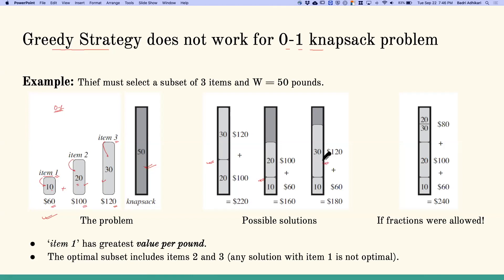Now dynamic programming would obviously find the optimal solution here. Let's see if greedy strategy can. With greedy strategy, we calculate the value per pound by dividing the value by the weight. For item 1, this would be $60 divided by 10 equals $6 per pound. Similarly for item 2, the value per pound would be $100 divided by 20, which is $5 per pound. And for item 3, this would be $4 per pound.